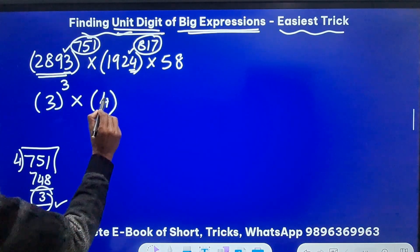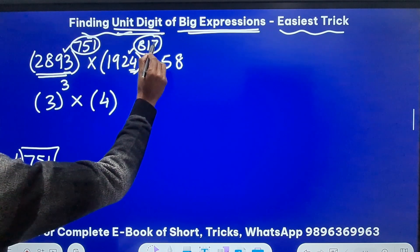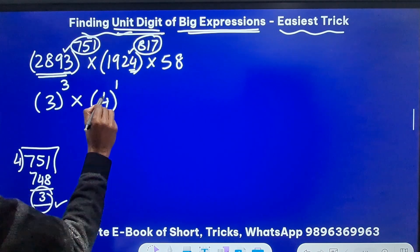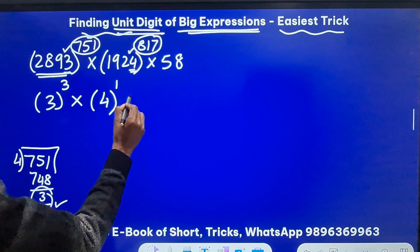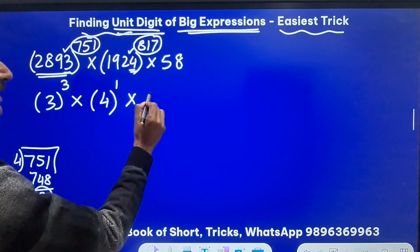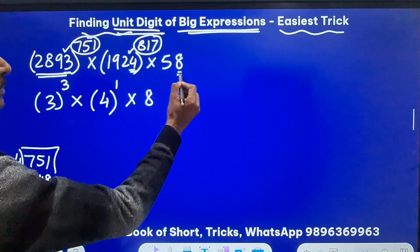So whenever for the base 4 you have an odd exponent just write 1 as the exponent and you have 58 so you can just write 8 here the unit base.